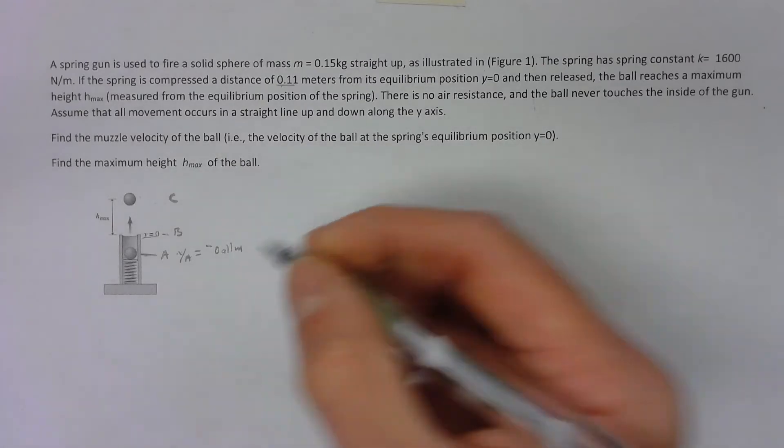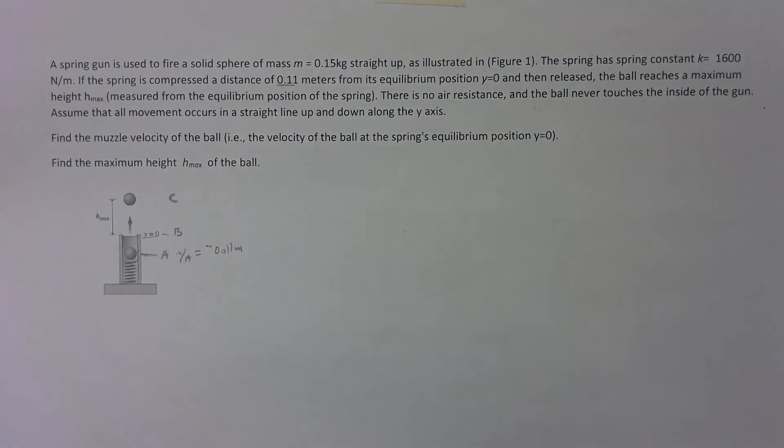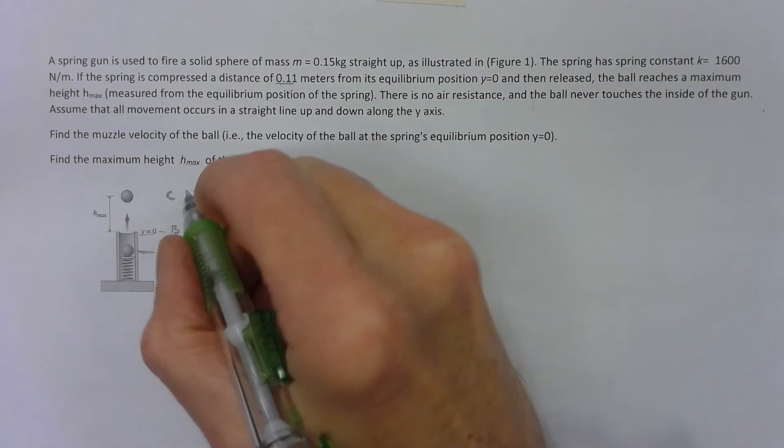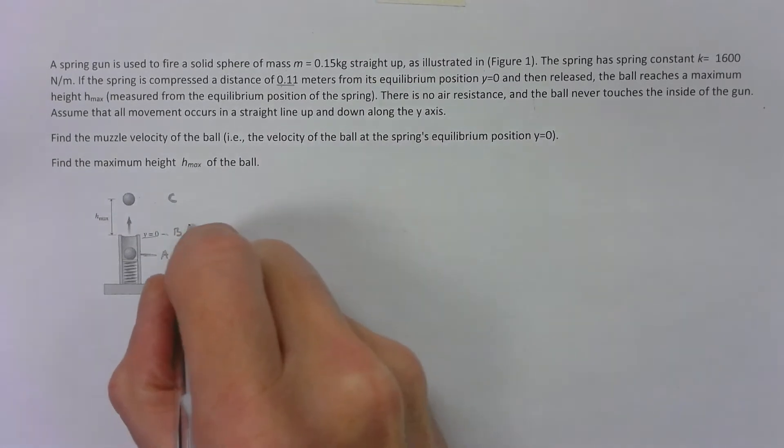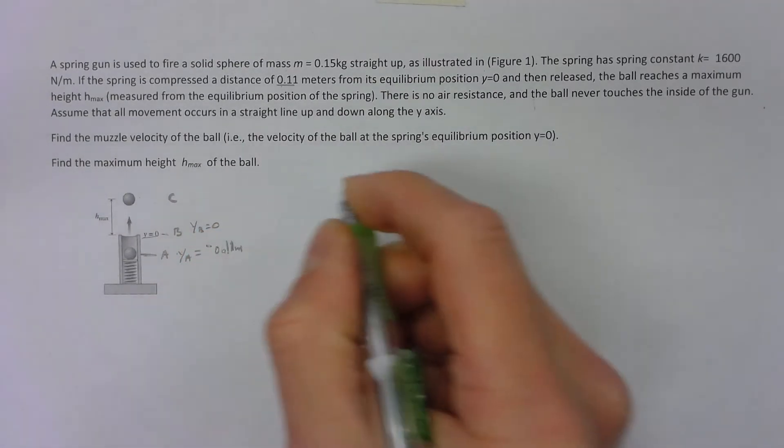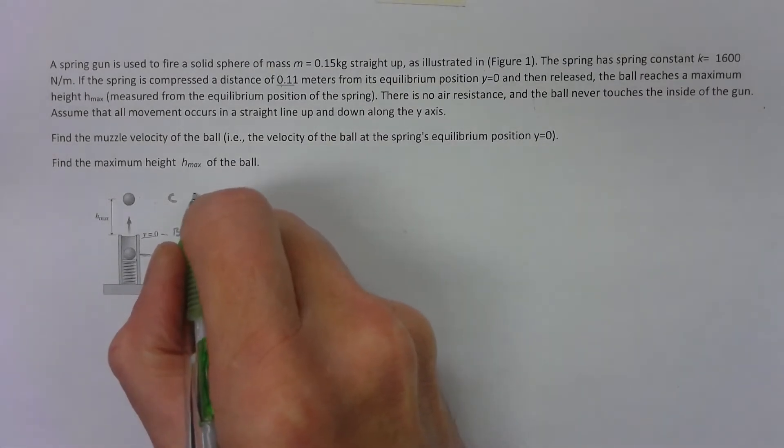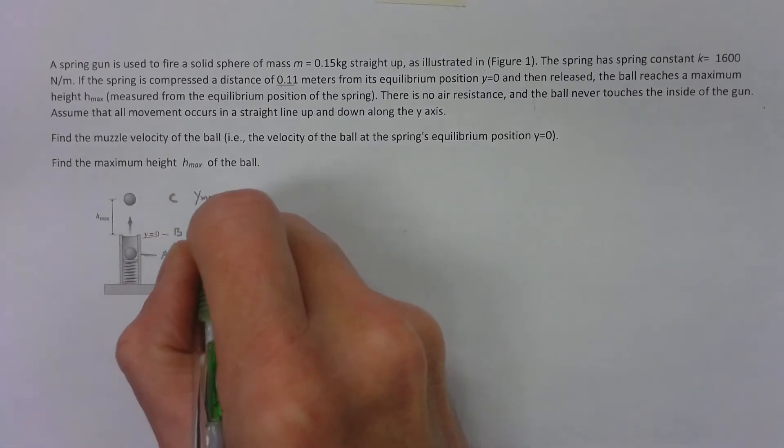When using energy heights, you have some zero height. Anything below that's a negative height, it's less than zero. Anything above it we don't know. We're saying that y at b is zero, and y at c is the maximum height. This is y_max, they call it h_max, I'm going to call it y_max.